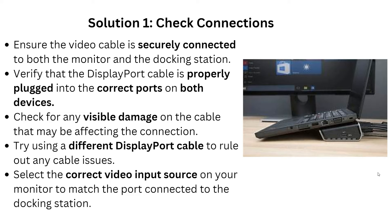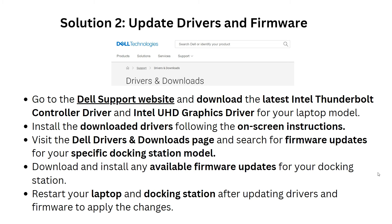First, you have to ensure the video cable is securely connected to both your monitor and the docking station. Verify that the display cable is properly plugged into the correct port on both devices. Check for any visible damage on the cable that may be affecting the connection. Try using a different DisplayPort cable to rule out any cable issue. Also, select the correct video input source on your monitor to match the port connected to the docking station.